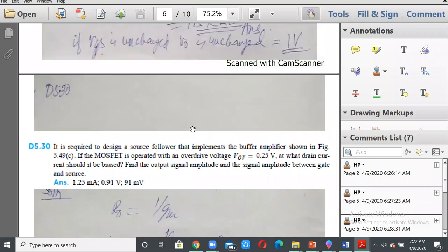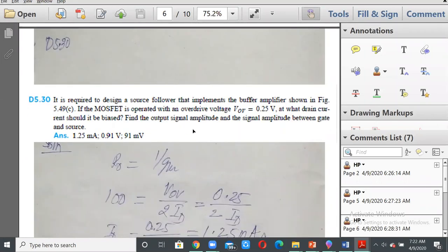Problem 5.30: It is required to design a source follower that implements the buffer amplifier shown in Figure 5.49C. If the MOSFET is operated with an overdrive voltage VOV equal to 0.25 volts, what drain current should it be biased? Find the output signal amplitude and the signal amplitude between gate and source.